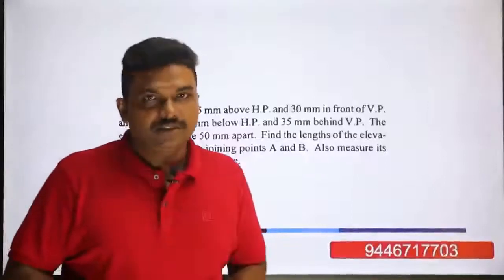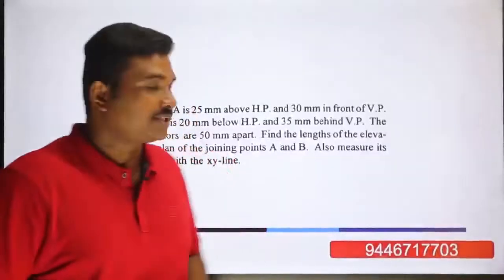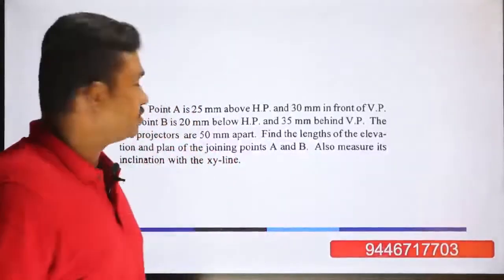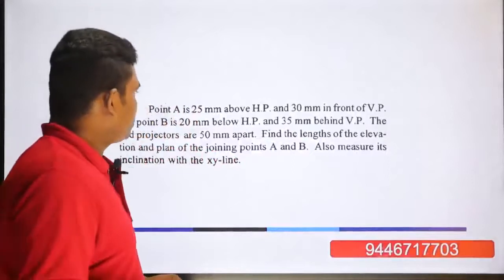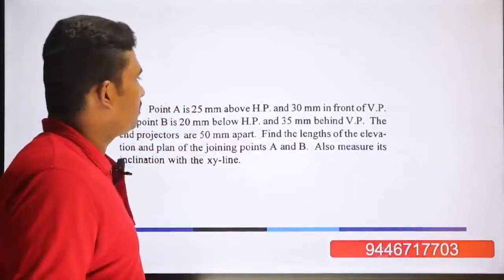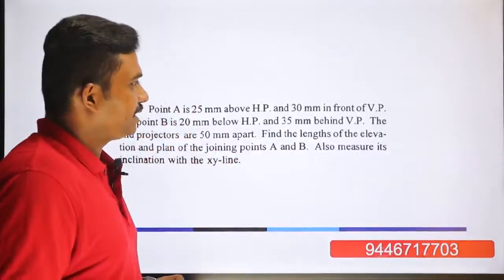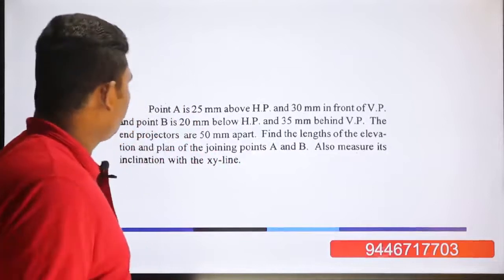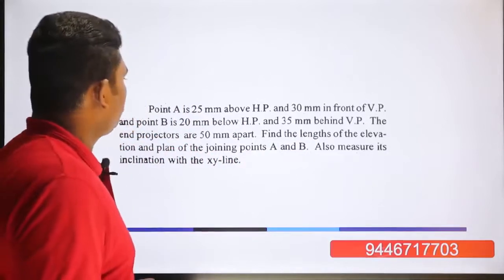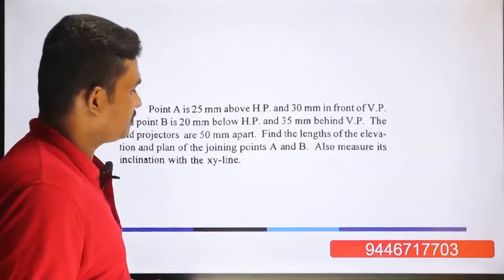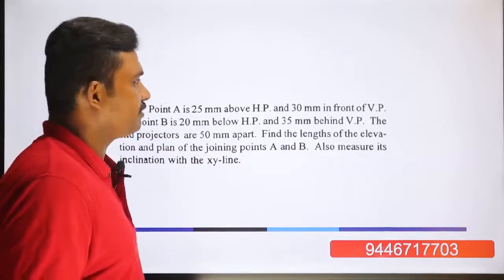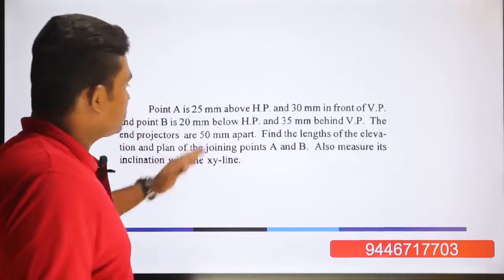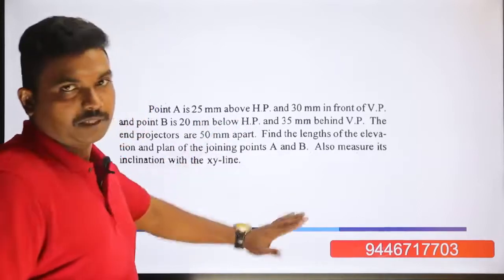Now let's go to the next question. Point A is 25mm above HP and 30mm in front of VP. Point B is 20mm below HP and 35mm behind VP. End projectors are 50mm apart.